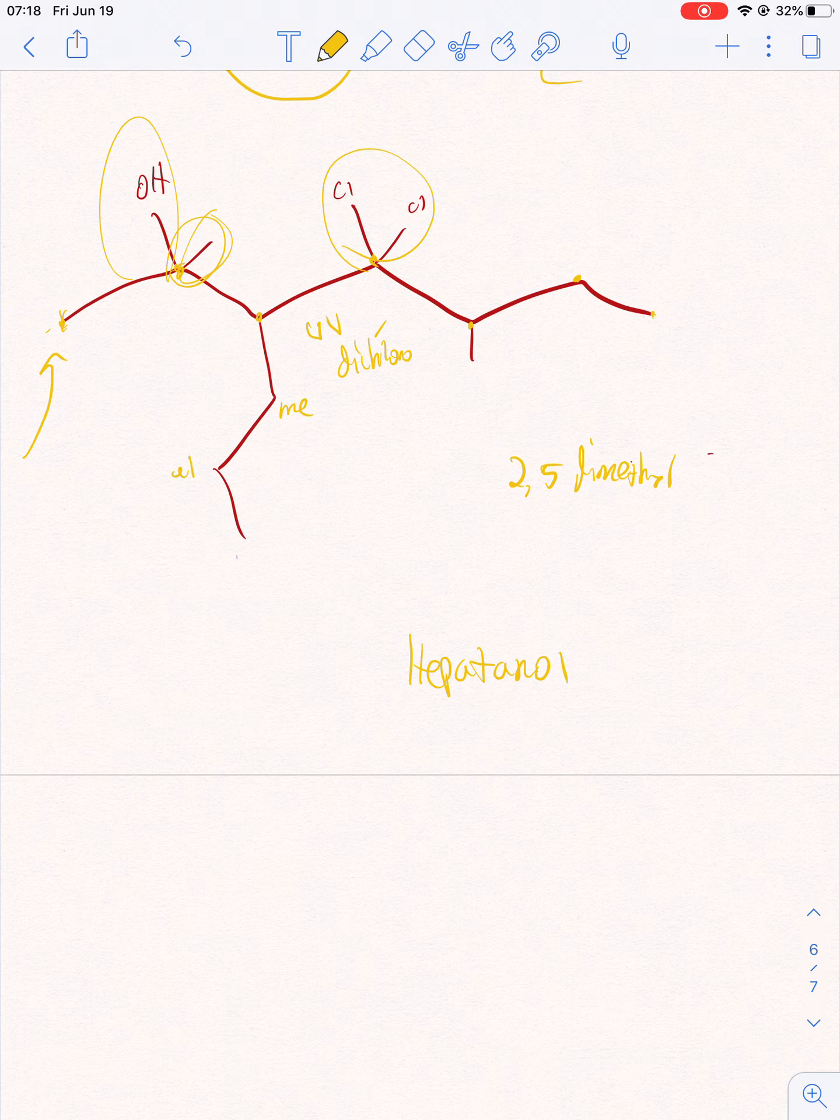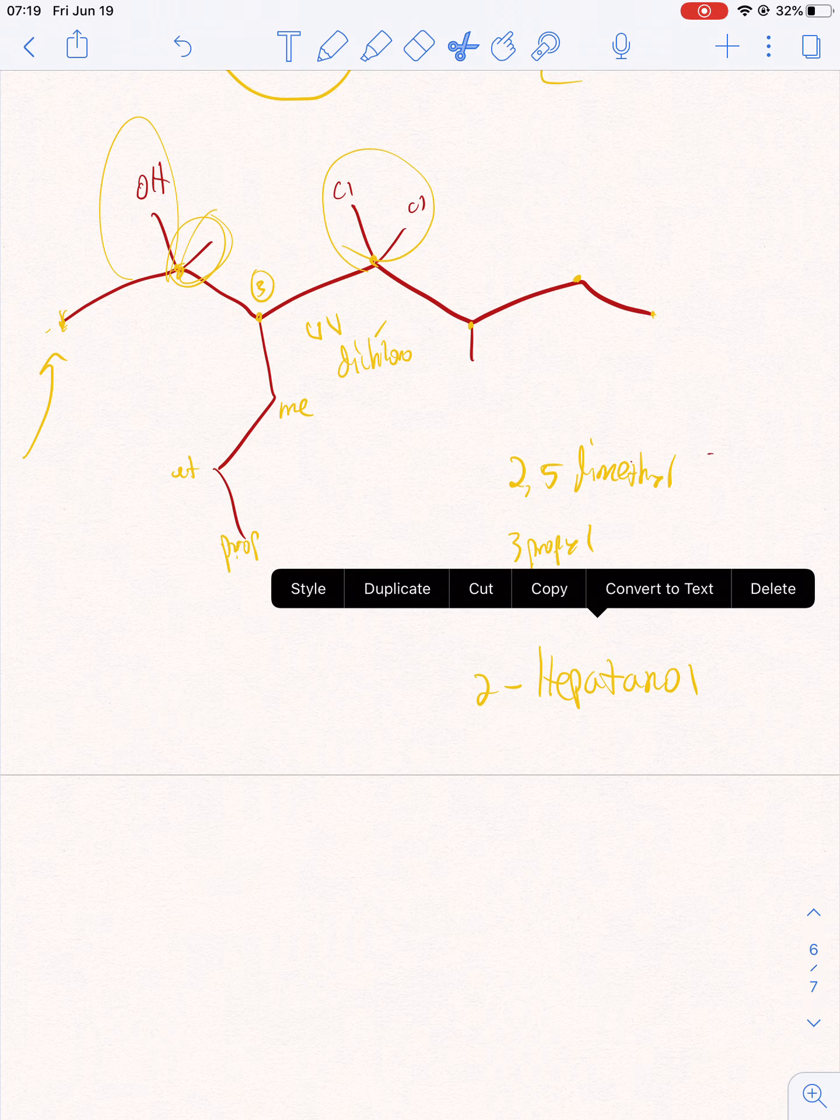Methyl, ethyl, propyl. On the third carbon we have a propyl - three propyl. In the second carbon we have an OH. Two heptanol - that's gonna be the end. So let's put it all together.